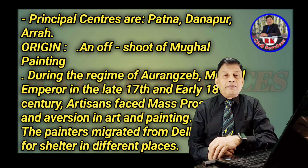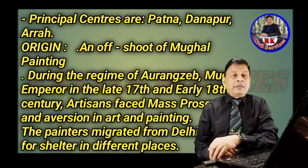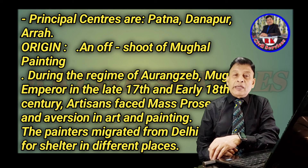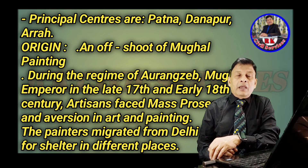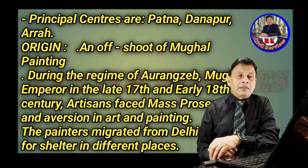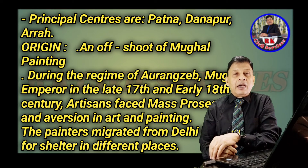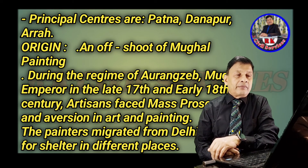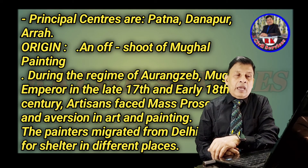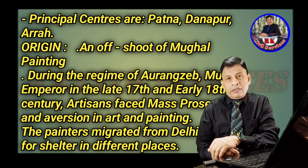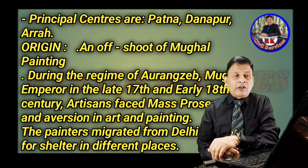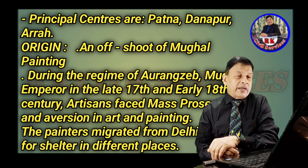Patna Kalam painting, also called the Patna School of Painting, has its principal centers at Patna, Danapur, and Aadha. Its origin, to repeat, is as an offshoot of Mughal painting.